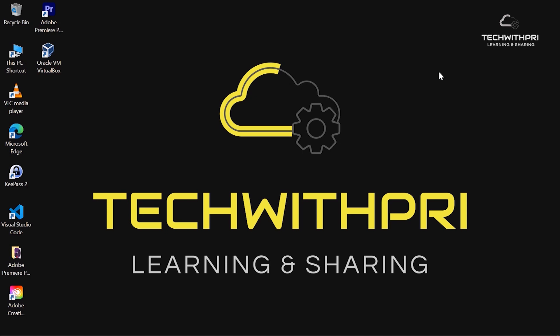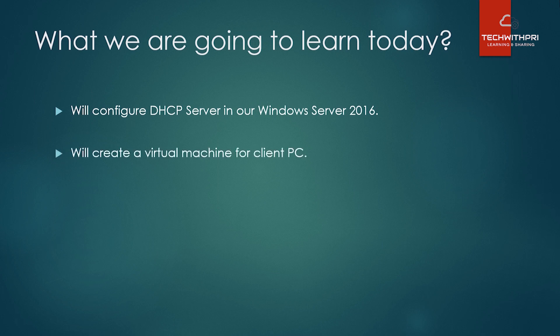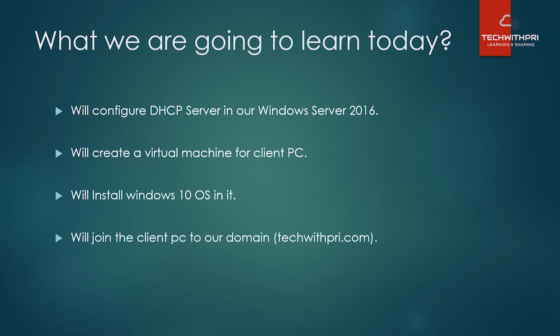Today, first we'll configure a DHCP server in our Windows Server 2016. Next, we'll create a virtual machine for a client PC, install Windows 10 on it, join the client PC to our domain techwithpre.com, and see how DHCP is working there. Make sure you watch the full video to understand this.